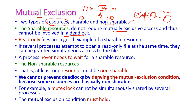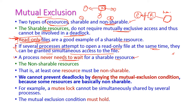Let us see one example for shareable resources — read-only files. If several processes attempt to open a read-only file at the same time, they can have simultaneous access because the file is read-only, so more number of processes can access it and the content will not be affected. The file can be shared among more number of processes. The process never needs to wait for shareable resources — this is the advantage of shareable resources.